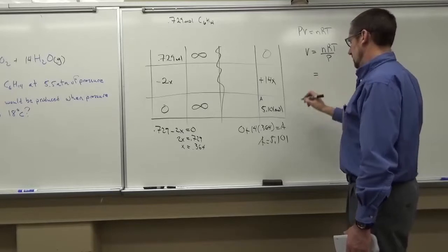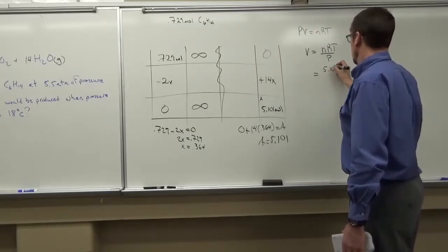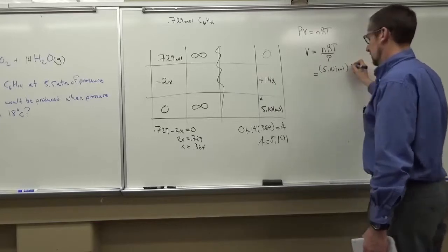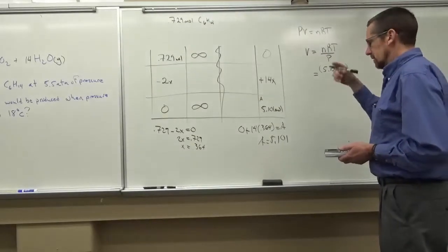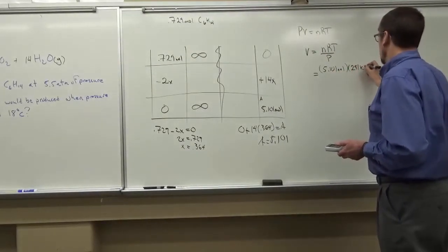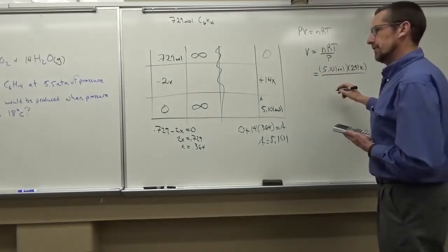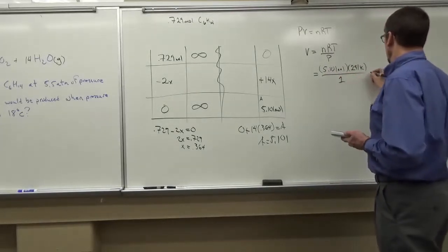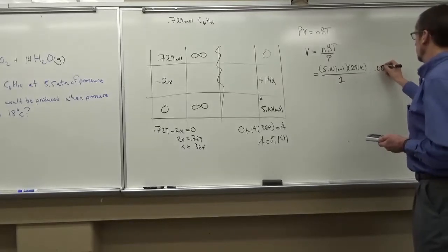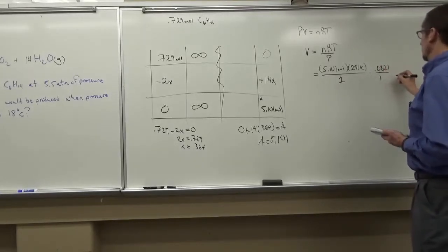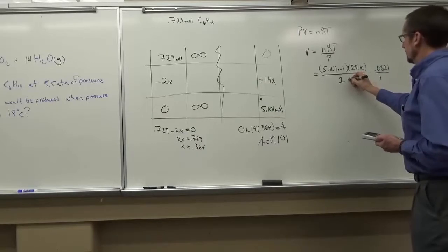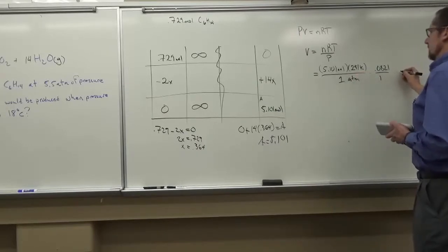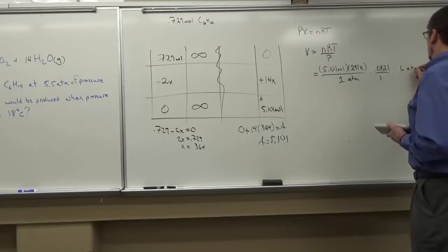So then I can just plug stuff in. 5.101 moles. We're at 18 Celsius. So that's 273, 283, 291 Kelvin. Pressure is one atmosphere. And then we're going to multiply by R. 0.0821 over 1. And its units are liter atmospheres per mole Kelvin.